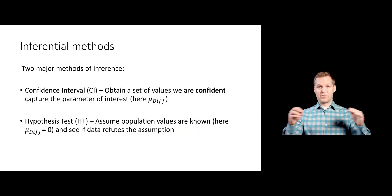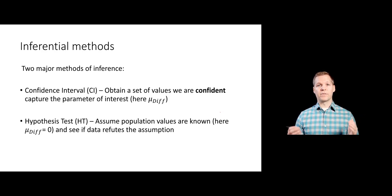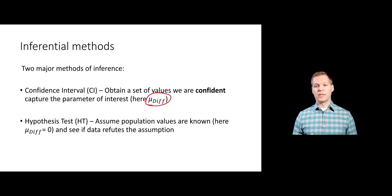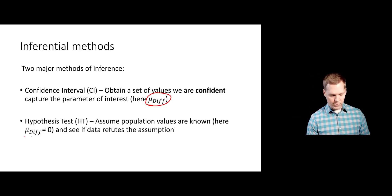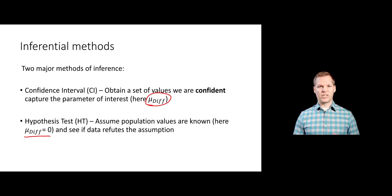That's all high-level — just the ideas of what we're trying to do with statistical inference. When we actually go to make our statements and claims, there are two major methods. One is called a confidence interval, where the main goal is to get a range of values for that parameter of interest — a range we're confident will capture the difference in means. Alternatively, we can do a hypothesis test, where we assume some population value, like assuming the true mean difference is zero, and then see if the data can refute that assumption.